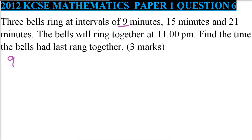We start with 9 and get the prime factors: 3 times 3. We go to the next bell, 15, which is 3 multiplied by 5. Then 21 is 3 multiplied by 7.